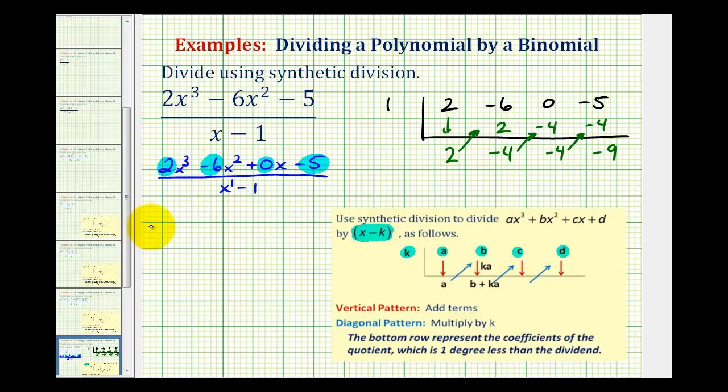So our quotient is going to be 2x² - 4x - 4 - 9 over our divisor of x - 1.